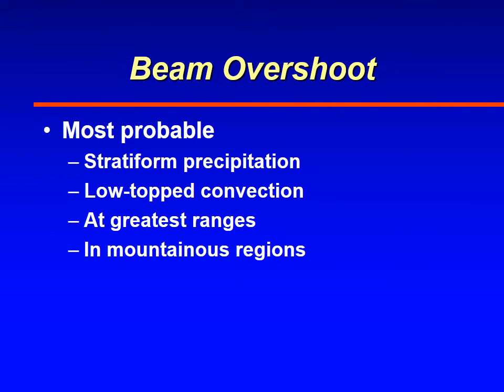Beam overshoot is more of a problem with stratiform precipitation because stratiform precipitation usually forms less than 10,000 feet above the ground. It's also a problem if you have thunderstorms with very low tops — 15,000 or 20,000 feet — at greater distances, since the radar beam is higher above the ground at greater distances. It's also a problem in mountainous areas where the radar sits on elevated terrain and doesn't see anything down below it.